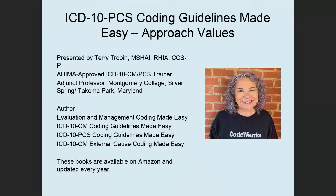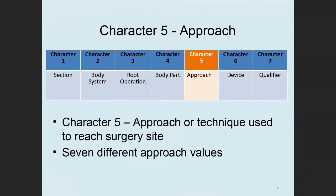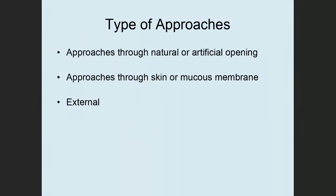Let's get started with character 5. Character 5 is the approach or technique used to reach the surgical site. There are seven different approach values. Let's look at the approaches in groups: some approaches are through a natural or artificial opening, other approaches are through the skin or mucous membrane, and others are external.